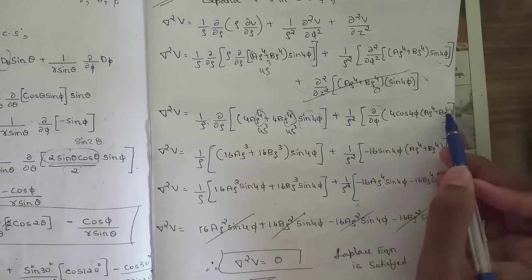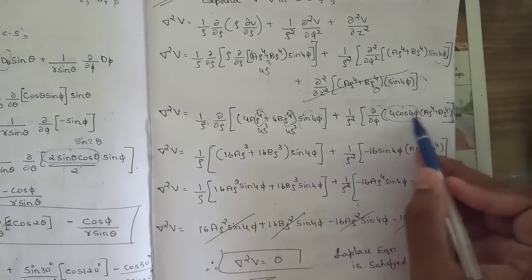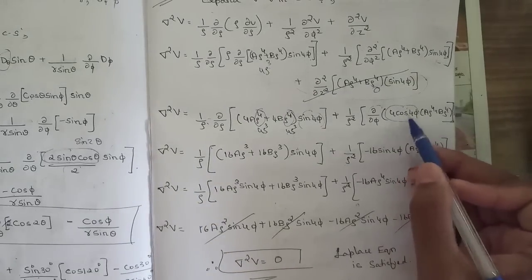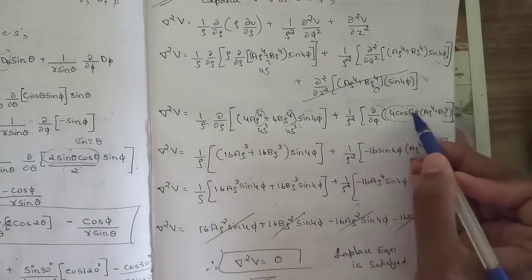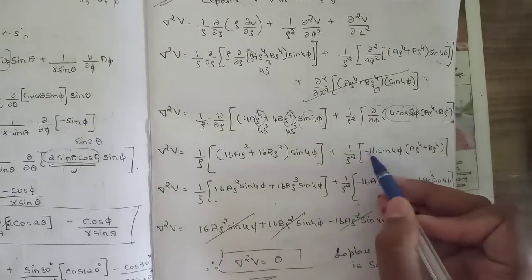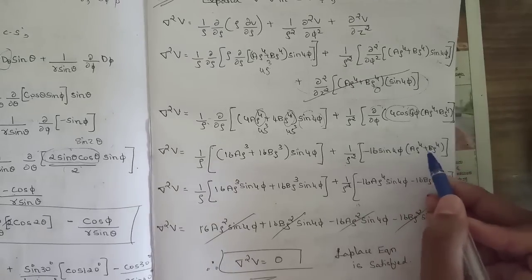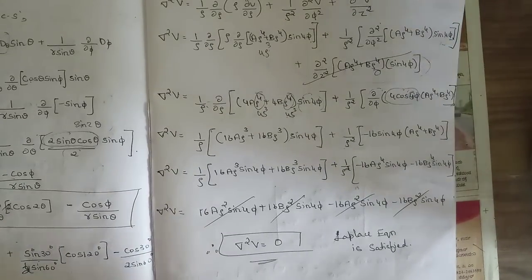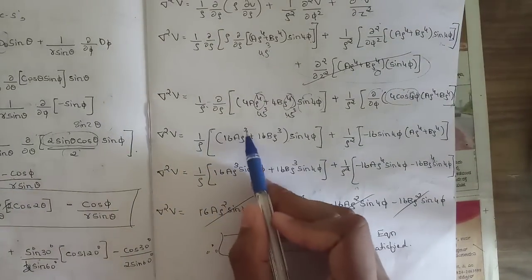Differentiating 4cos4φ again gives −16sin4φ, since the derivative of cos is −sin and we have a factor of 4. So the second φ-derivative term is −16sin4φ · (aρ⁴ + bρ⁴).